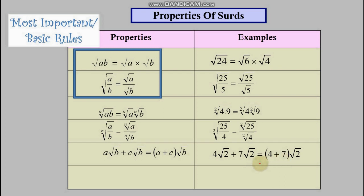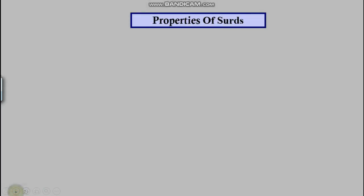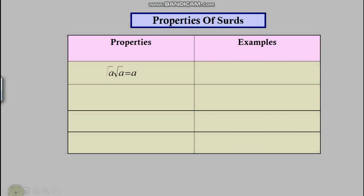...11x. The same goes with surds: 4√2 + 7√2 = 11√2. And the same applies with subtraction — you can subtract them just like regular unknowns with common variables. So 6√3 minus 3√3 should be 3√3 altogether.